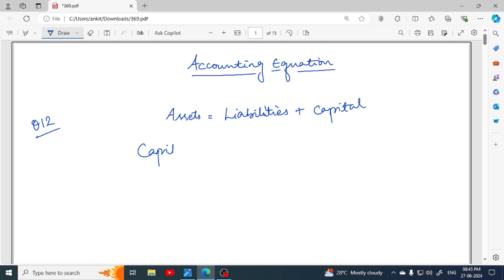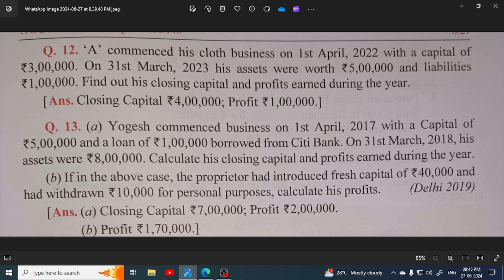We will minus the liabilities. Capital equals Assets minus Liabilities. Now what are we getting? We are getting closing capital. This is the formula. If we don't have capital, we can get it from assets minus liabilities. Capital is on 31st March. Now you can see what values are given.